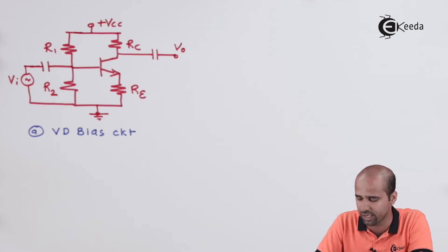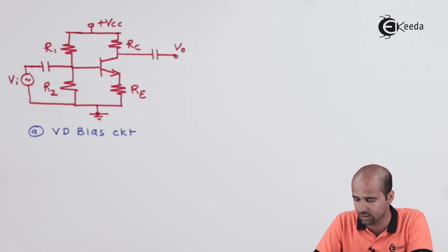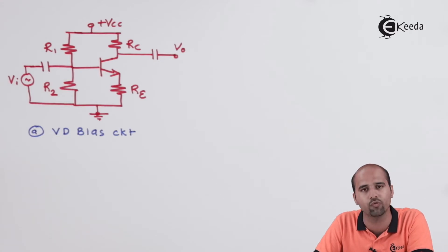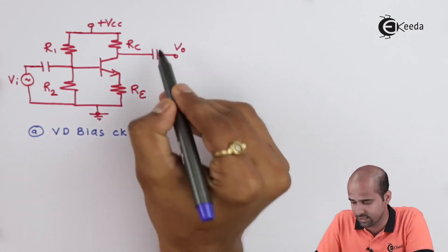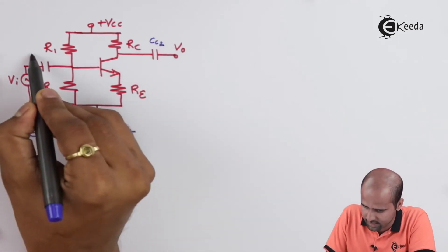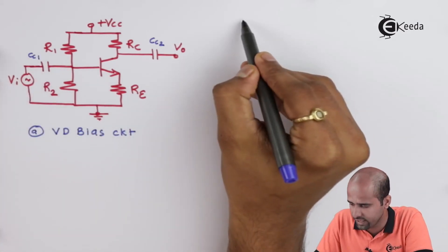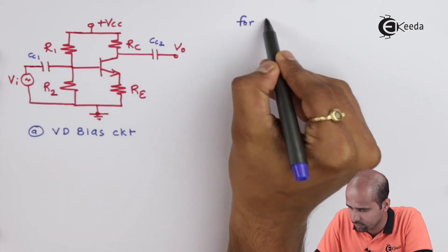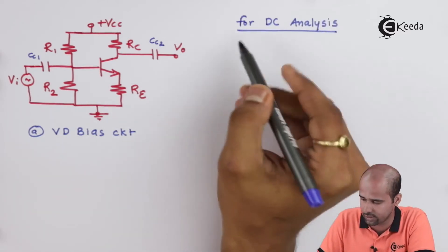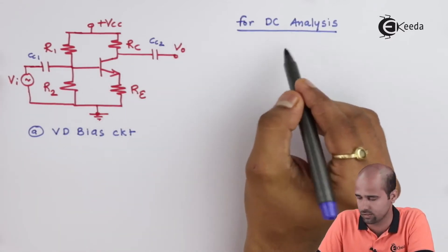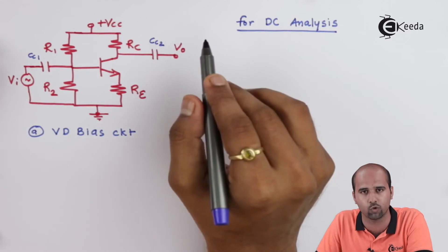One obvious question is: why are we using capacitors? When we insert capacitors, we can easily separate the DC and AC circuits. For DC analysis, the capacitors play a major role. Since CC1 and CC2 are inserted in the circuit, a very important step for DC analysis is to open all the coupling capacitors and bypass capacitors.